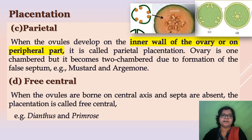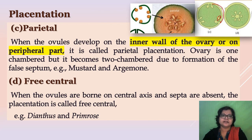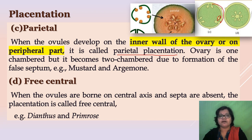The next type is parietal placentation. From the name we can understand that here the ovules are attached towards the periphery — towards the inner side of the ovarian wall. When the ovules develop on the inner wall of the ovary or on the peripheral part, it is called parietal placentation. The ovary is one-chambered but it can become two-chambered due to the formation of a false septum. Example: Argemone. In the diagram, the ovules are present towards the periphery on the inner side of the ovarian wall.